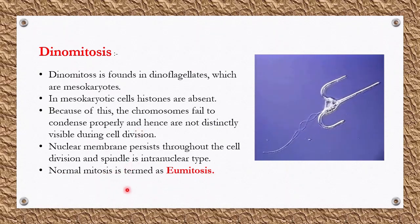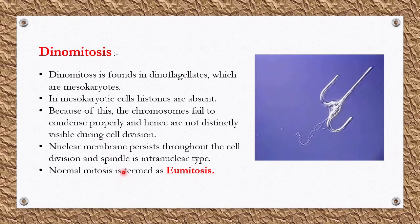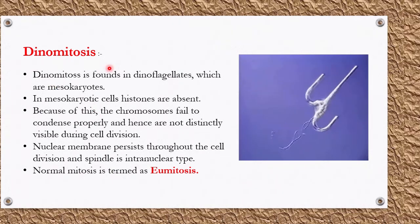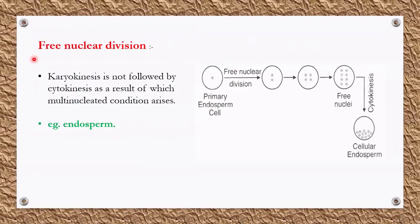Normal mitosis is termed eumitosis. This abnormal or modified form of mitosis found in dinoflagellates is called dynamitosis.